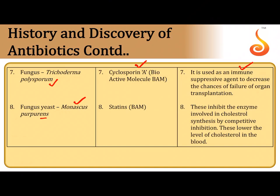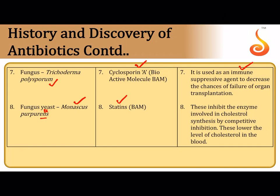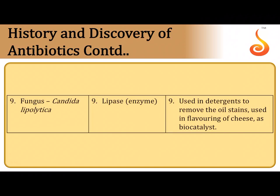A yeast called Monascus purpureus is a source of a bioactive molecule called statin. This statin inhibits the enzyme involved in cholesterol synthesis, decreasing cholesterol production in the body and lowering blood cholesterol levels.